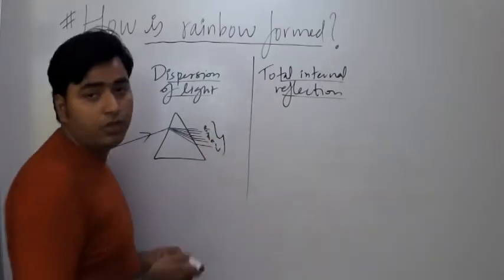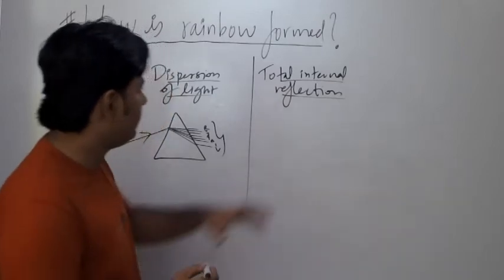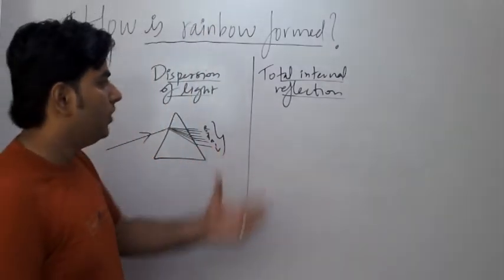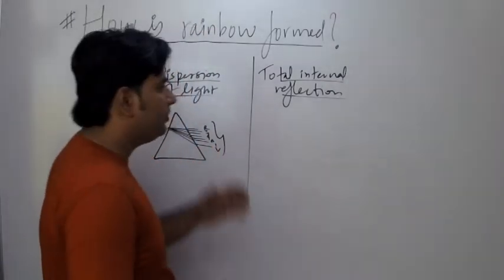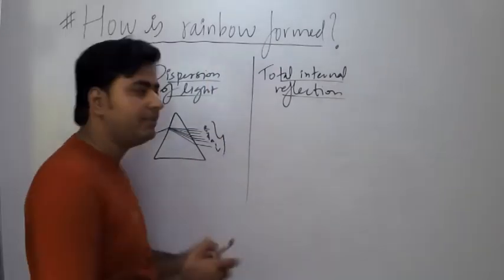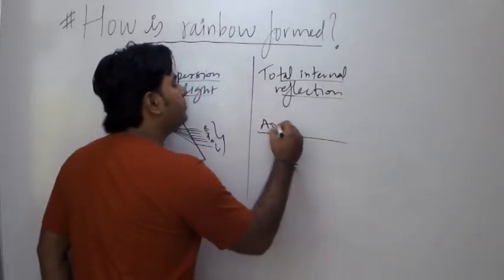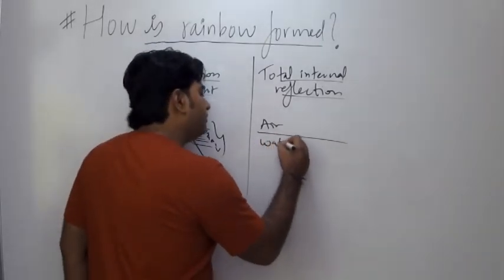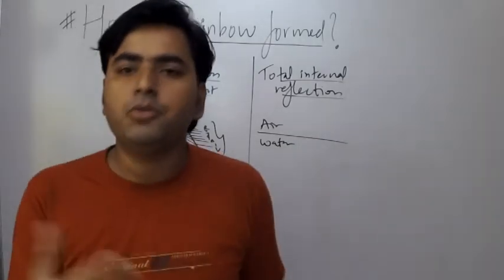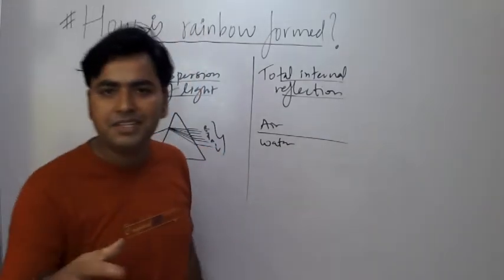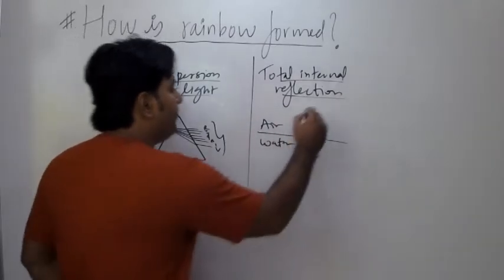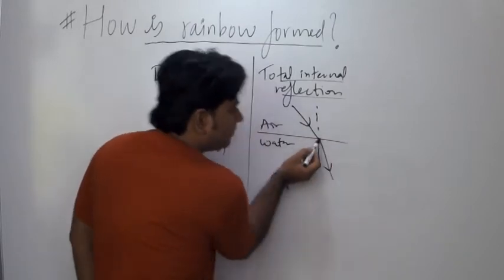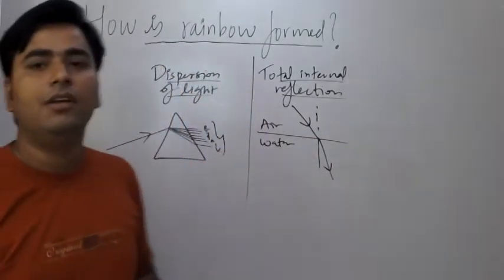That group of colors is called a spectrum. Now for total internal reflection — to understand it, you need to know about refraction. Refraction is when light enters from one medium, such as air, to another medium, such as water. When light changes its medium, it bends from its original path. That bending is called refraction.